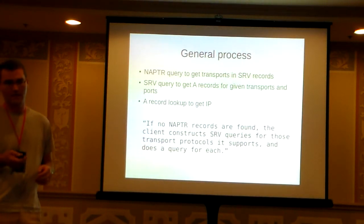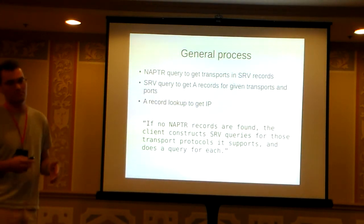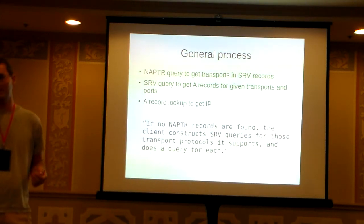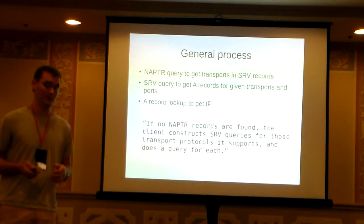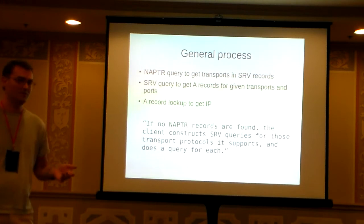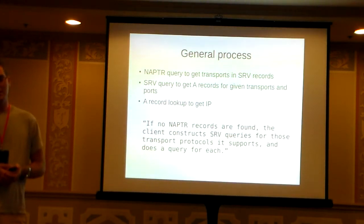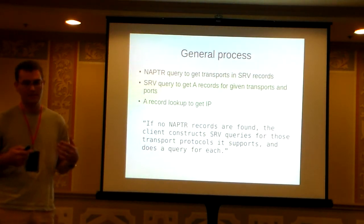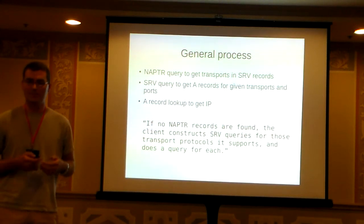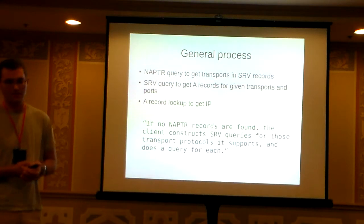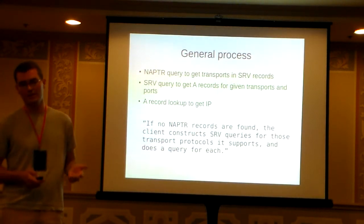The general process of locating a SIP service is multi-step with multiple records involved. First, you do a NAPTR lookup, which gives you SRV records indicating the transport protocols the server is capable of. Based on what your server supports, you do an SRV lookup to determine the A record for that server. And then finally an A record lookup to get the IP address.